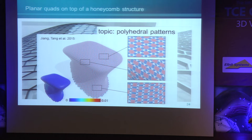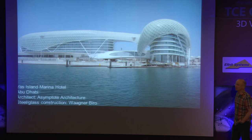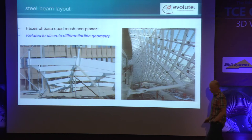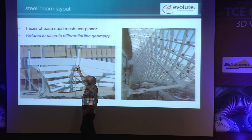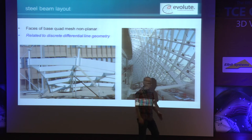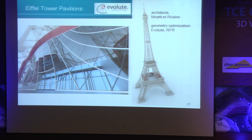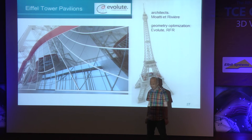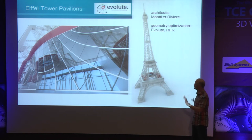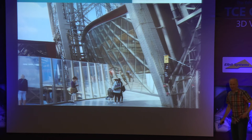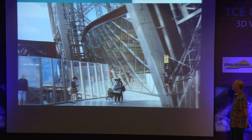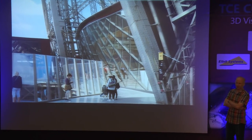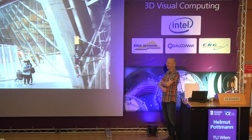Another real project is the Yas Island Marina Hotel in Abu Dhabi — one of our first projects. Here you can see the node axis materialized where the panels are later mounted. Another very nice project is on the first platform of the Eiffel Tower, where three pavilions have a nicely curved glass facade. The underlying structure is a conical mesh. This is already constructed — if you visit Paris and the Eiffel Tower you can see this glass facade, which incorporates our research. This was one of the very few projects where we were involved in the design phase.